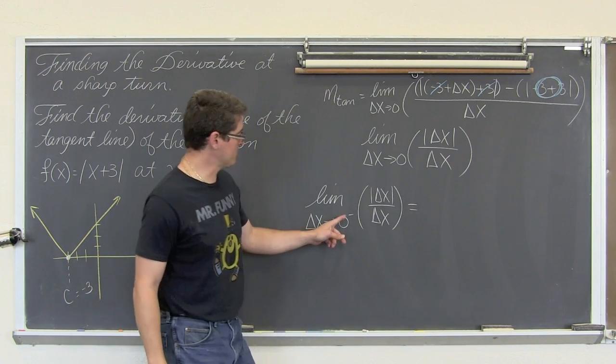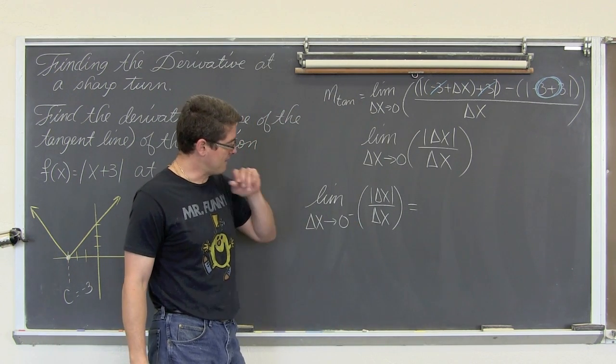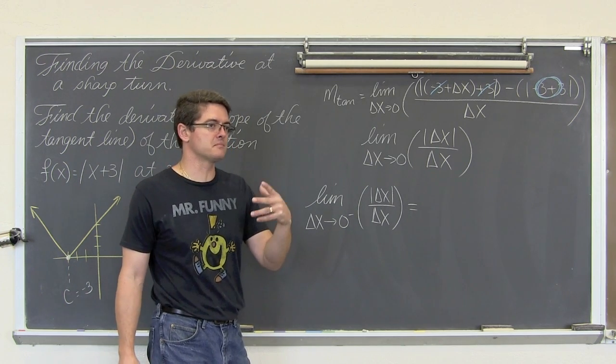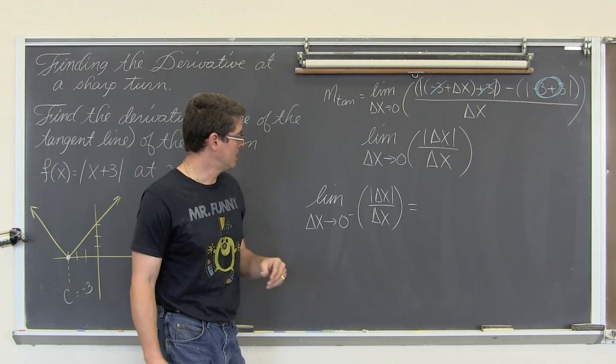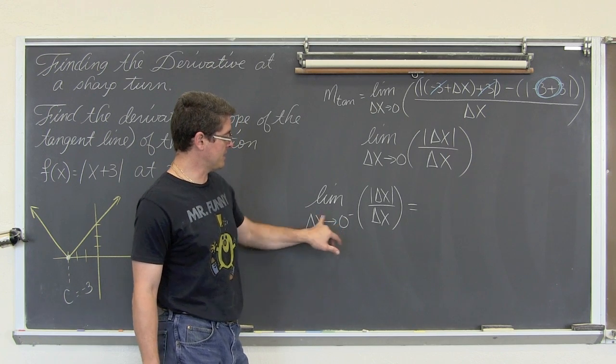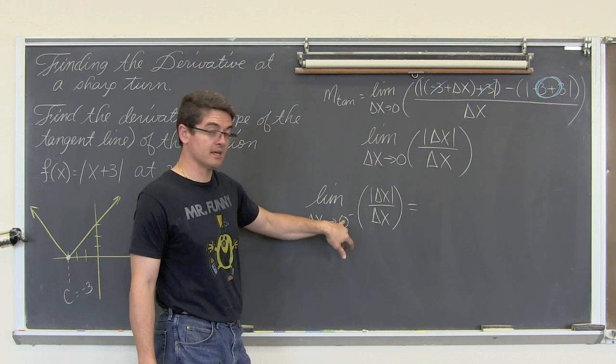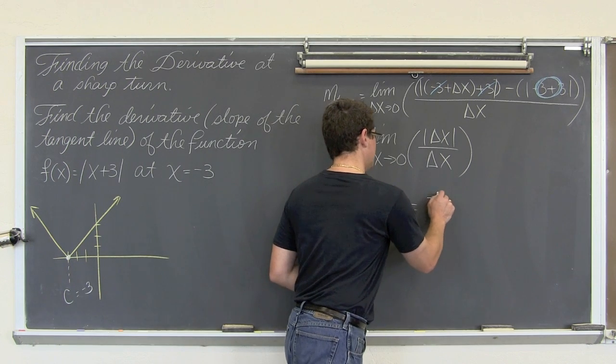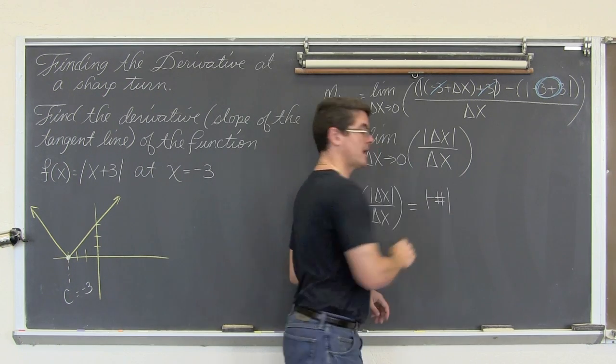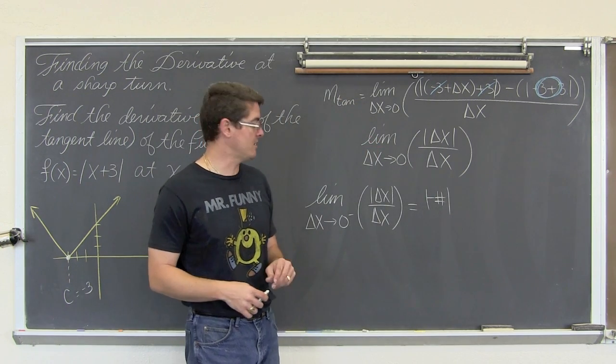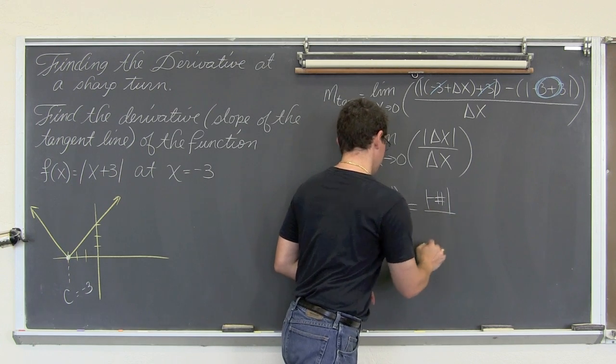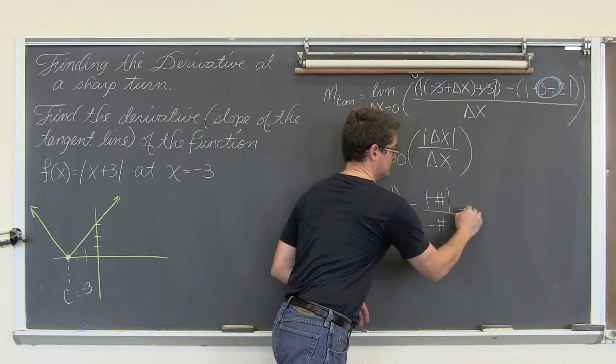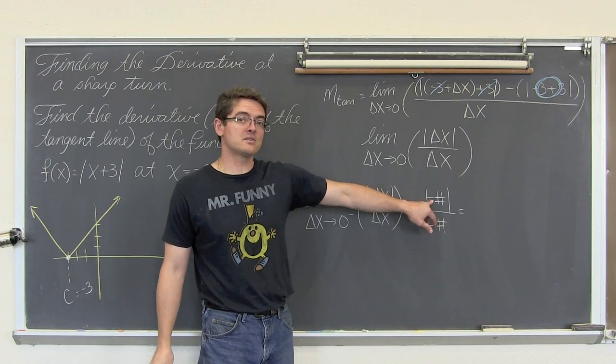So the limit as Δx approaches zero from the left of |Δx|/Δx. Ok, as I am approaching zero from the left, like negative 0.00001. I am just going to work with signs though. I am going to plug in a negative number. Δx is going to be negative because I am to the left of zero. So if I take a negative number and put it in an absolute value function, the Δx is going to be a negative number.